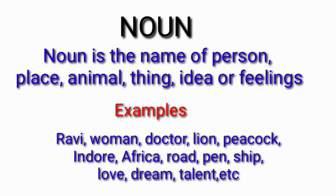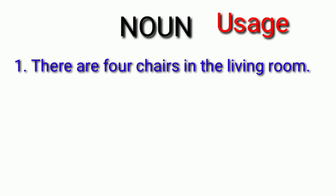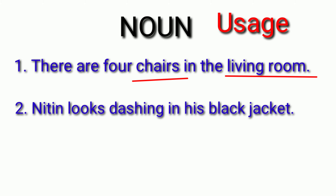Let's see how these nouns can be used in sentences. Number 1: There are 4 chairs in the living room. Chairs are things and living room is a place, which means chairs and living room are examples of nouns. Next example: Nitin looks dashing in his black jacket. Nitin is the name of a person and jacket is the name of a thing, so Nitin and jacket are examples of nouns.